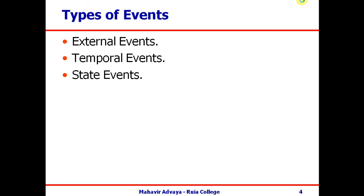The third type is the state event — events that occur when the system reaches a certain state. Taking an example of an inventory management system, which maintains the stock of products sold in a shop: every product has some stock limit that determines when it should be reordered. For example, sugar should be ordered when 50 kg or less is remaining — that is, when the sugar stock goes below 50 kg.